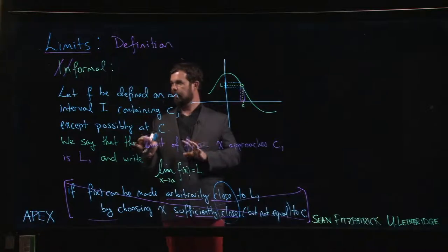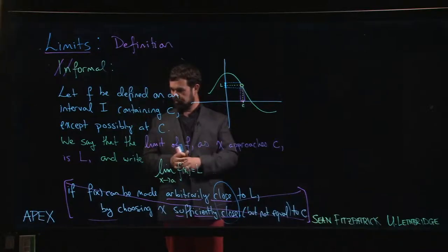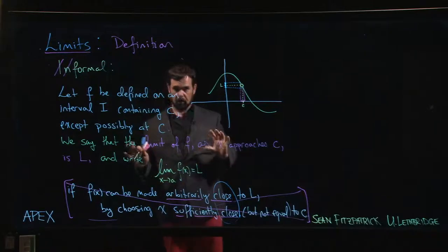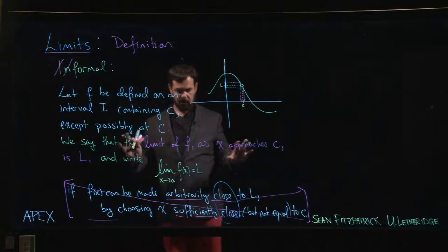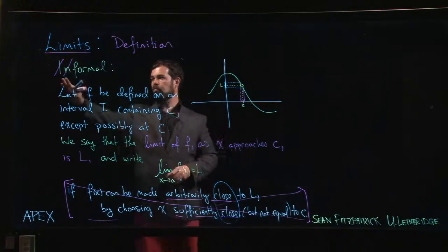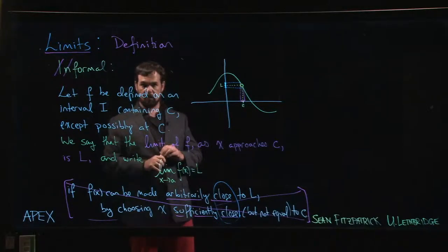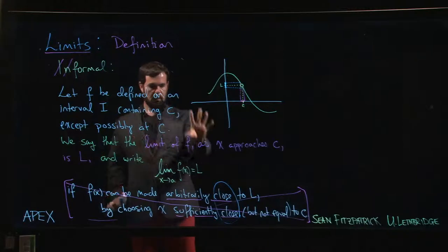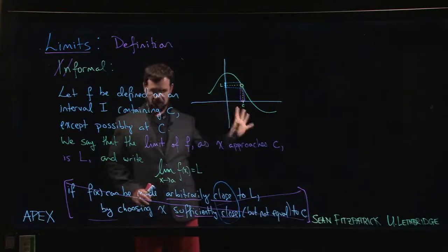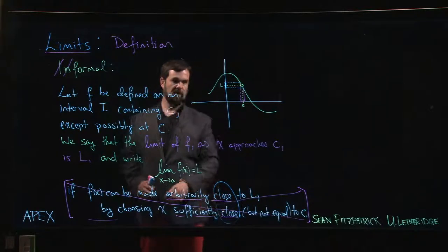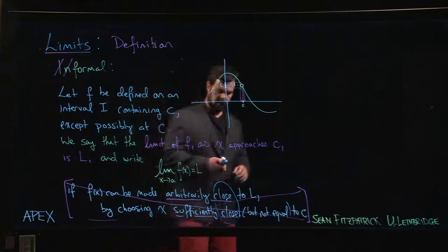In the last video we gave an informal definition of the limit, and we weren't entirely happy with language like 'arbitrarily close' and 'sufficiently close.' We've struck that informal language and we're going to move to a formal definition. The preamble stays the same — all we're going to change is to make precise what we mean by 'arbitrarily close' and 'sufficiently close,' and the hint comes from the picture.